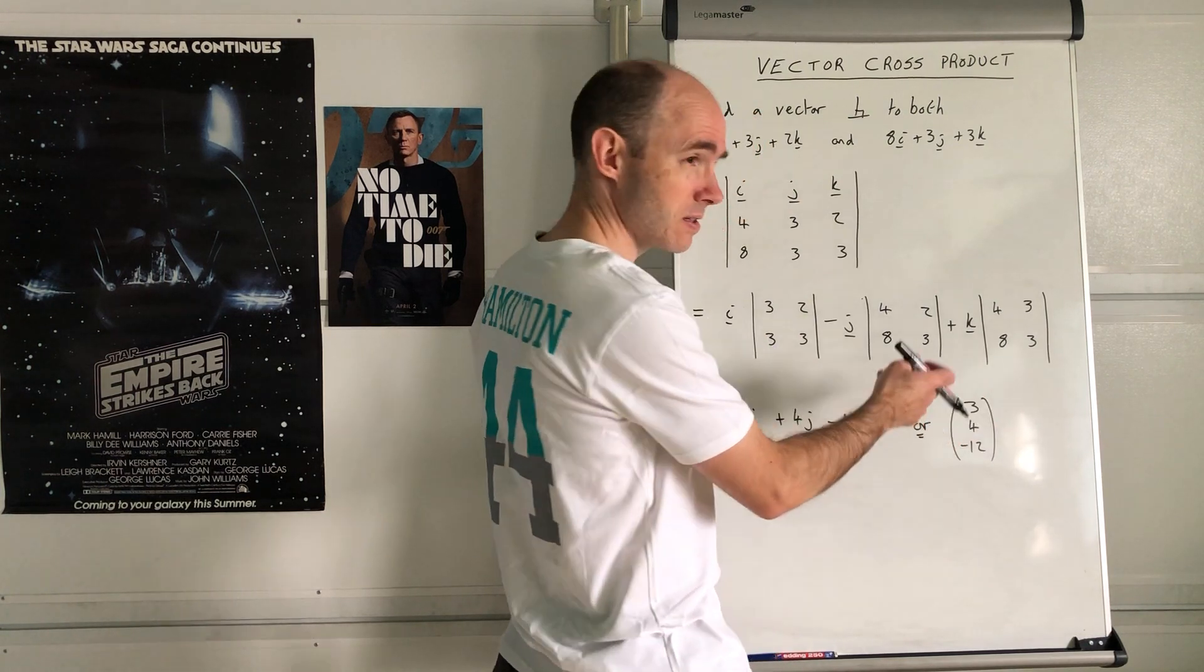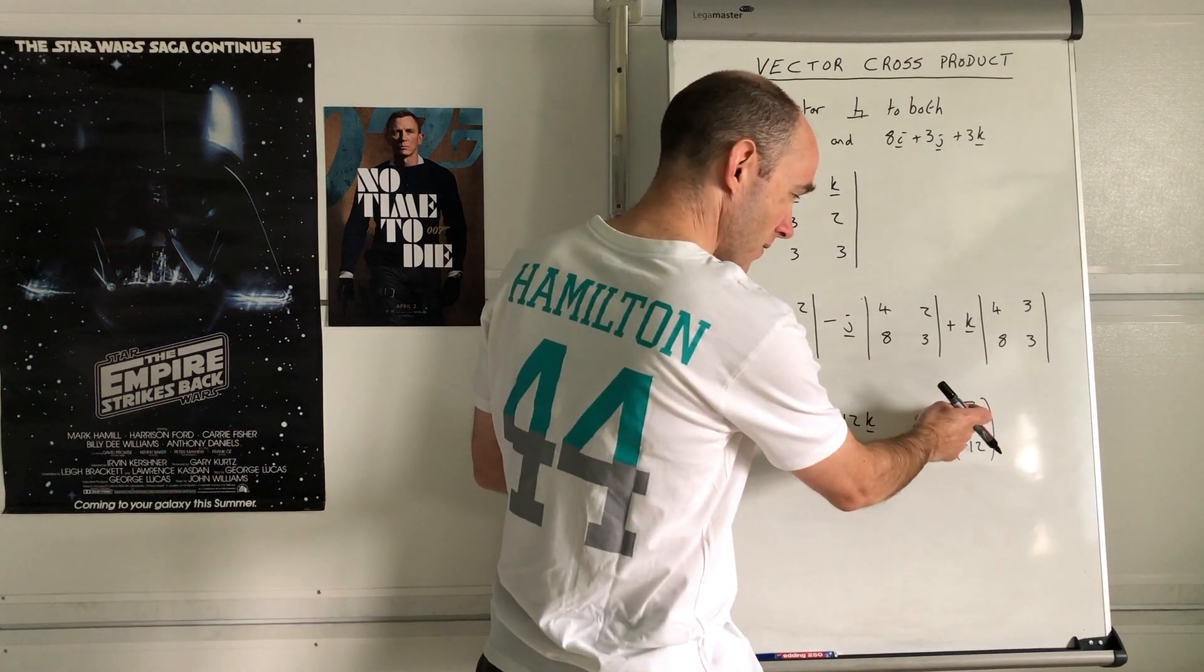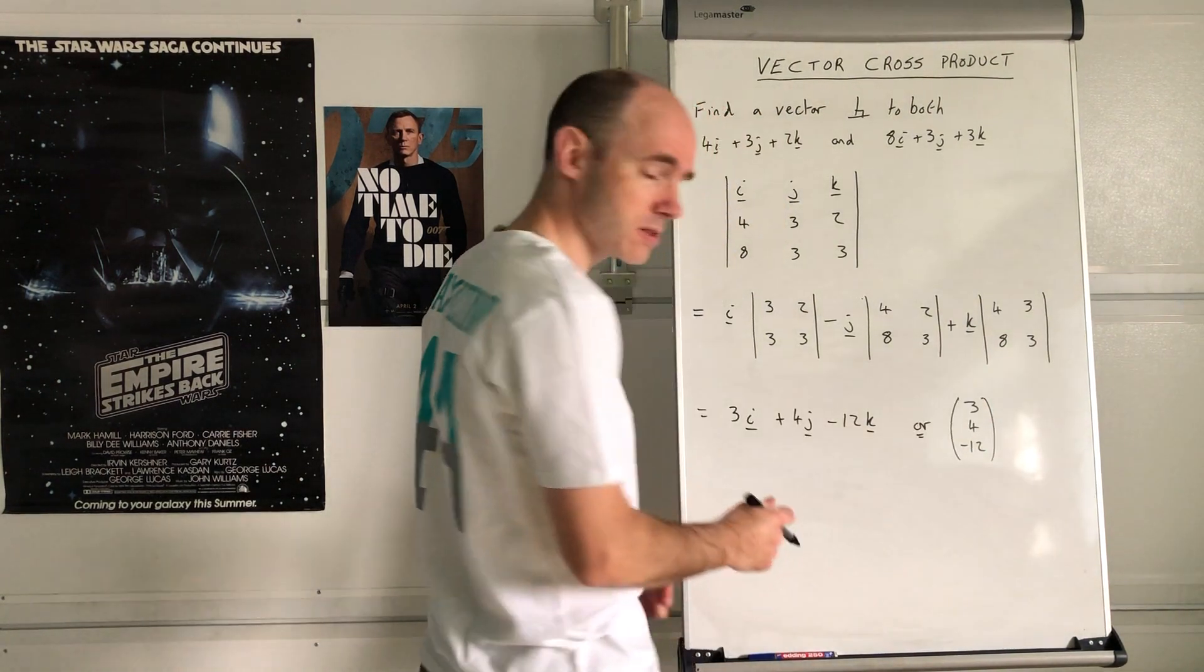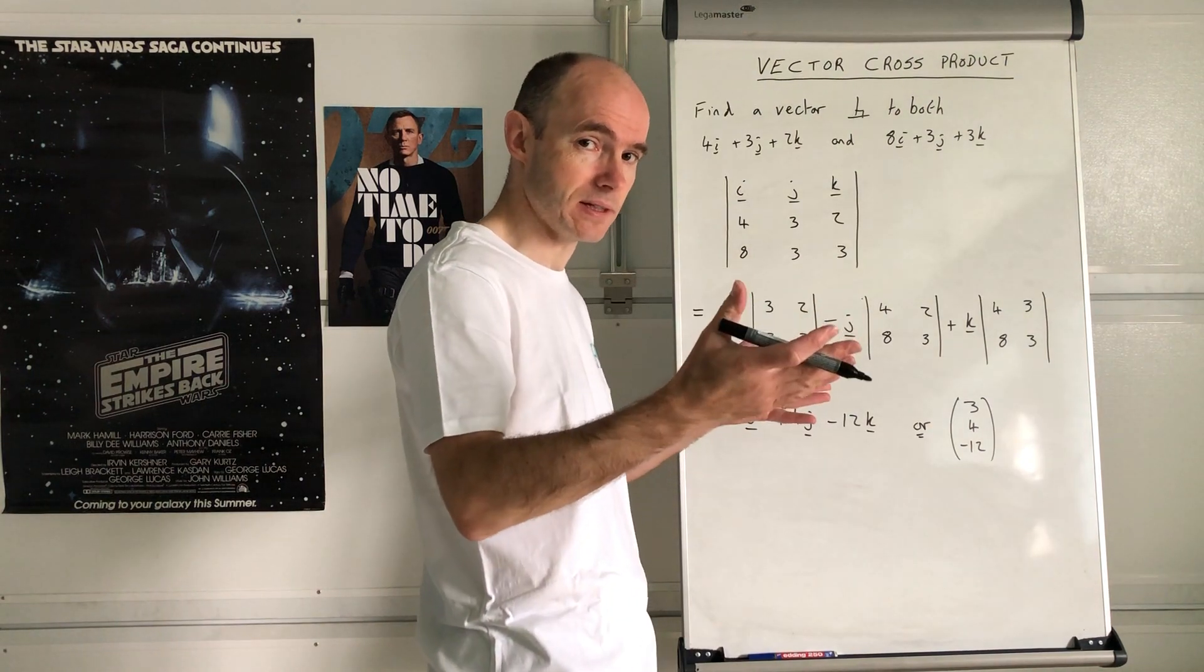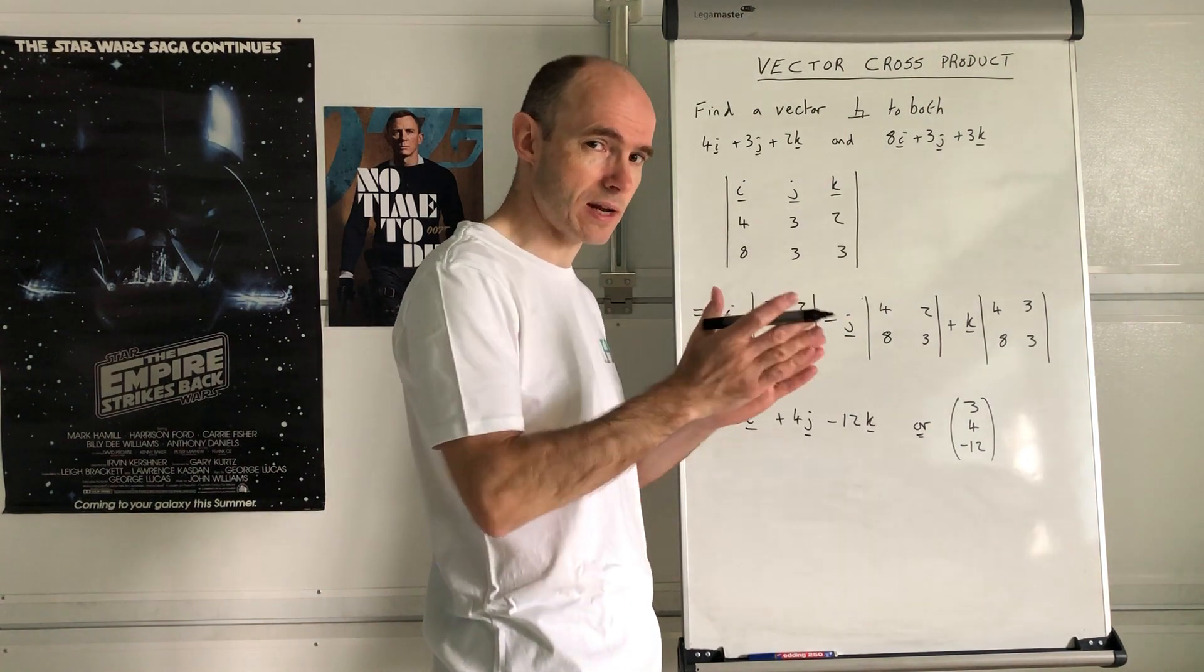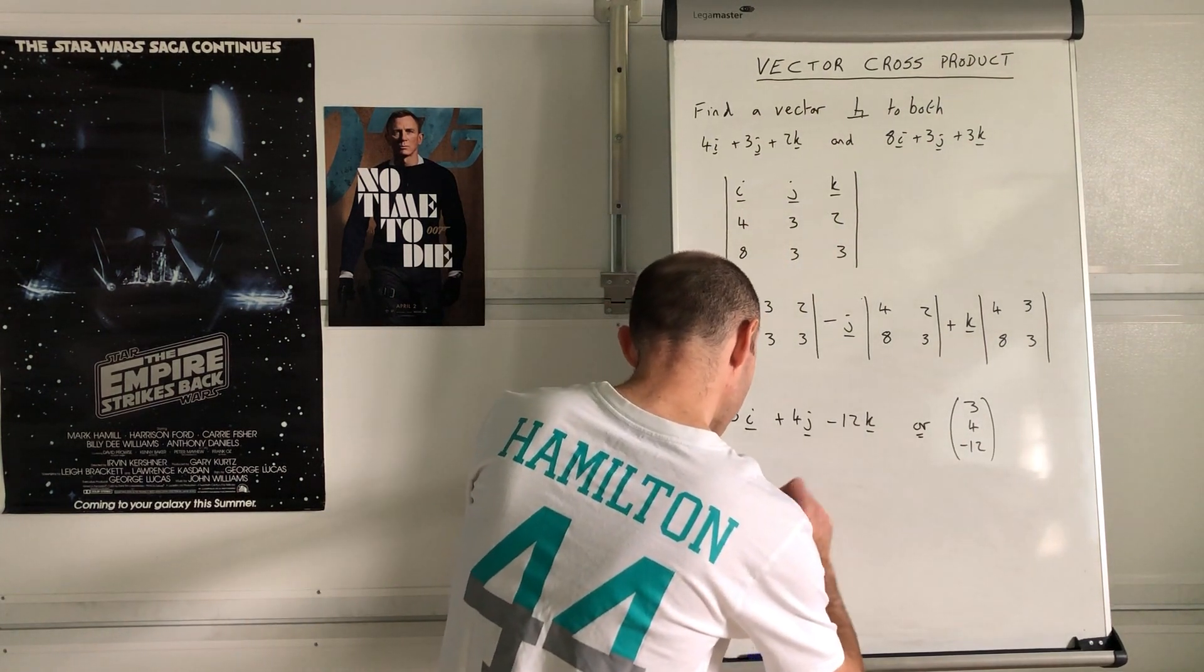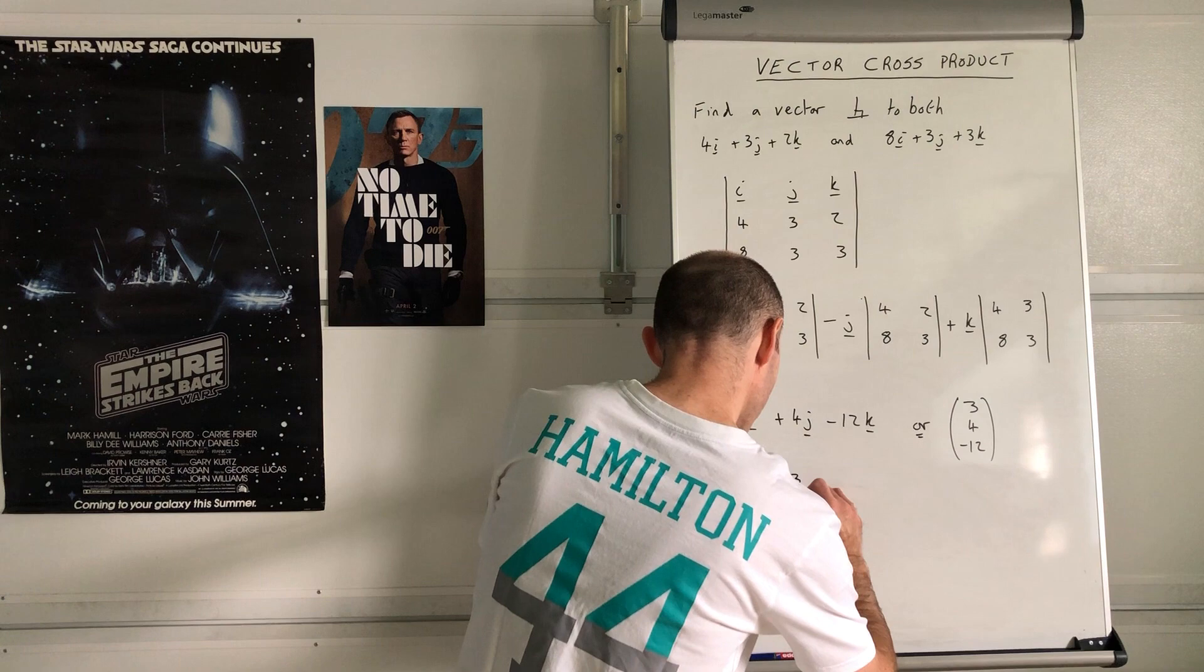The magnitude of that is 13. That vector has a length of 13. To bring it down to a length of 1, you divide by 13. So a unit vector would be 1/13th of that: 3, 4, negative 12.